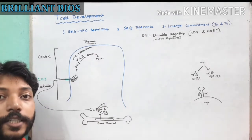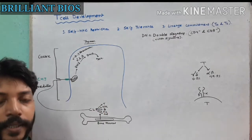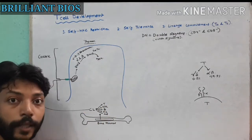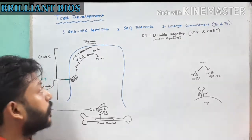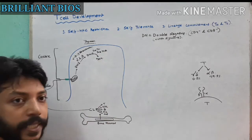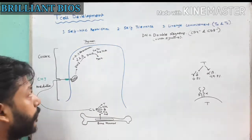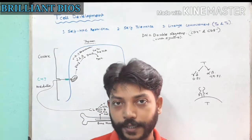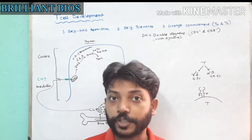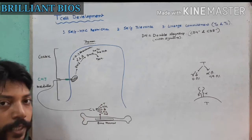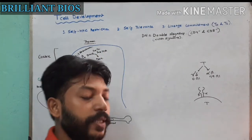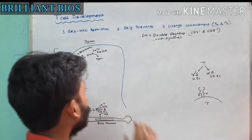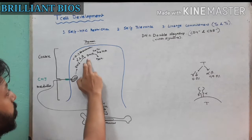In the DN3 stage, no alpha chain is yet produced. Instead, the DN3 cell starts to produce a pre-T alpha chain — not the true alpha chain, but a surrogate chain that helps the beta chain form the pre-T cell receptor. This pre-TCR is not the true T cell receptor. Those DN3 cells that cannot produce the pre-TCR cannot survive, so production of the pre-TCR is very important. The DN3 then becomes DN4.